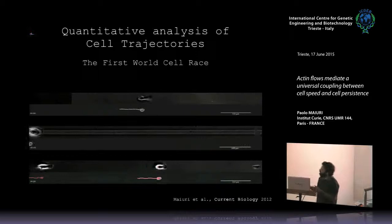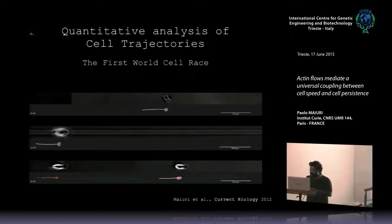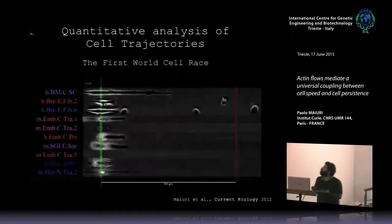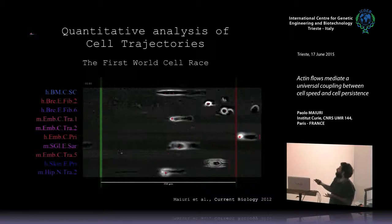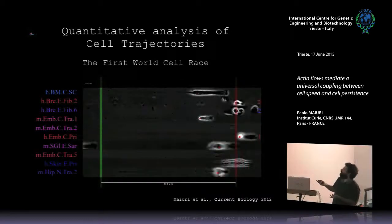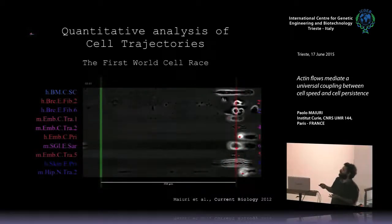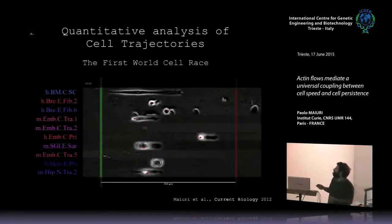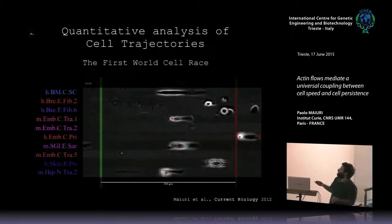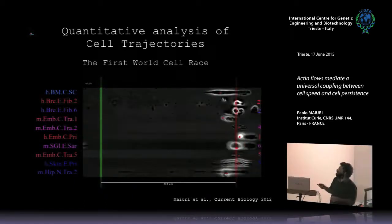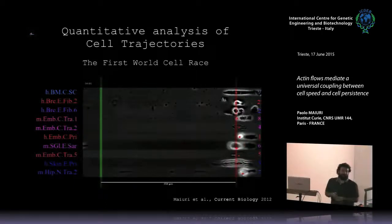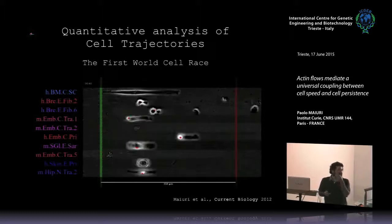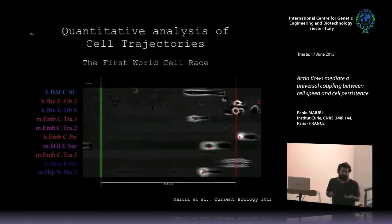I developed a software to segment and track these images. That is the kind of trajectory that we measured. It was a race, so we need a winner. The winner was a human embryonic stem cell that ran the 350 micrometer track at a speed of a bit more than 5 micrometers per minute.